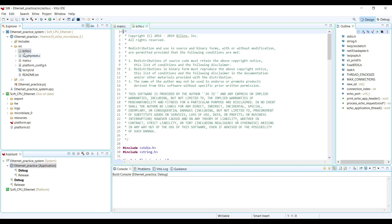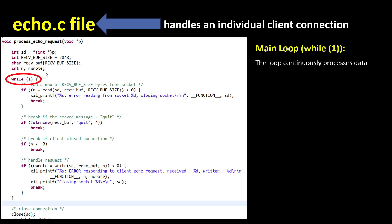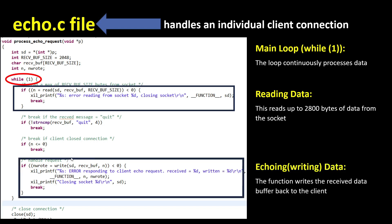The next file, and the heart of the echo server, is echo.c. It contains all the important functions you need to send and receive data to your PC. The echo.c contains a process that handles individual client connections. It has a main loop that continuously processes received and transmitted data. It contains two important functions: the read function, which receives data from the client and writes it to the receive buffer, and the write function, which writes the receive data buffer back to the client.